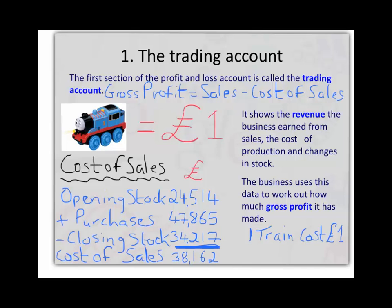The cost of sales is calculated by taking the opening stock of toy trains at the beginning of the year, adding it to how many we purchase in terms of stock during the year from our supplier, and minusing how many toy trains we have left as closing stock at the end of the year.